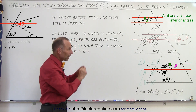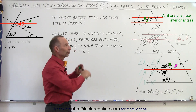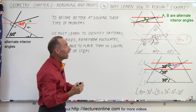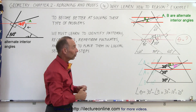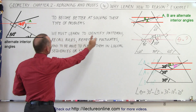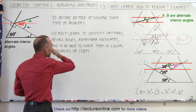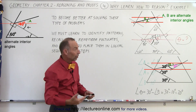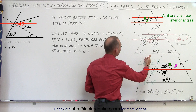Now this problem is probably a little bit too advanced for this stage — we haven't learned a lot of these rules yet. This is just for illustrative purposes. The question is: why must we learn how to reason? We must learn to reason by using a combination of identifying patterns, recalling rules, remembering postulates, and placing them all in a logical sequence of steps to come up with the final answer.